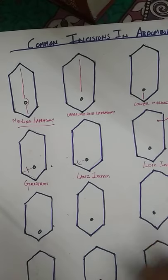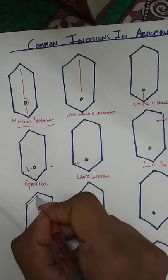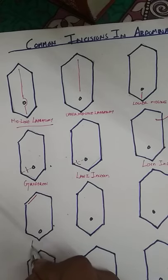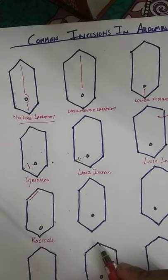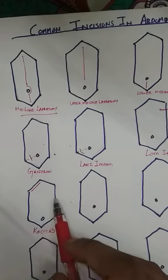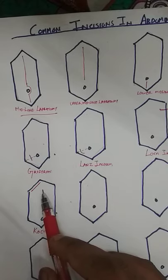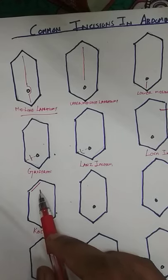Another very important incision is the Kocher's incision — K-O-C-H-E-R apostrophe S. This incision is used for open cholecystectomy, that is, removal of the gallbladder which is infected in cases of cholecystitis.